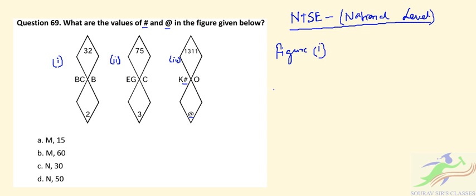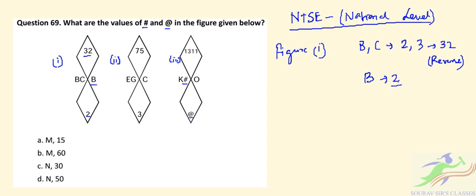From figure number one, we can see that B and C are given. B and C is represented in numerals as 2 and 3 — written as 32 in reverse form. B stands for 2, which is placed on the downside. So this is the information from figure number one.